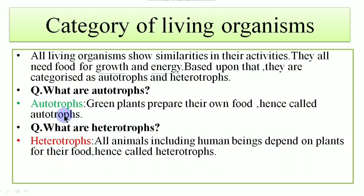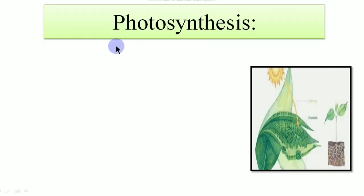Autotrophs can prepare their own food by a process which is known as photosynthesis. How to derive the meaning from this term? Photo means light, synthesis means manufacture. So photosynthesis means manufacture of food in presence of light.